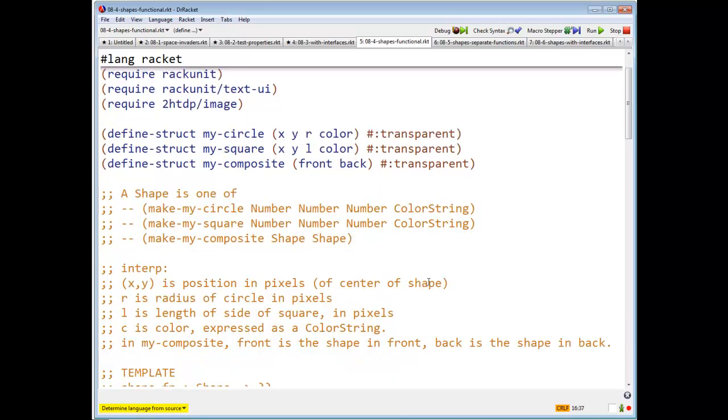And of course, here I have interpretations. Right, x, y is the position of the center of shape in pixels. R is the radius of the circle. L is the length of the side of the square. C is the color, expressed as a color string. And in my composite, front is the shape in front, back is the shape in back. Right, that'll make a difference when we go to doing add to scene.